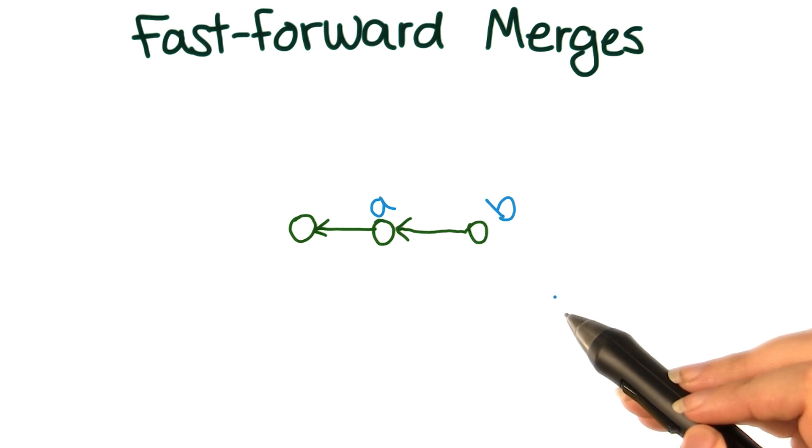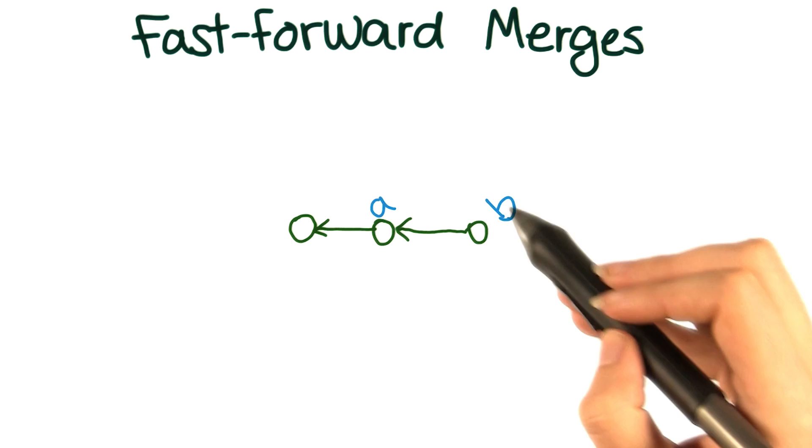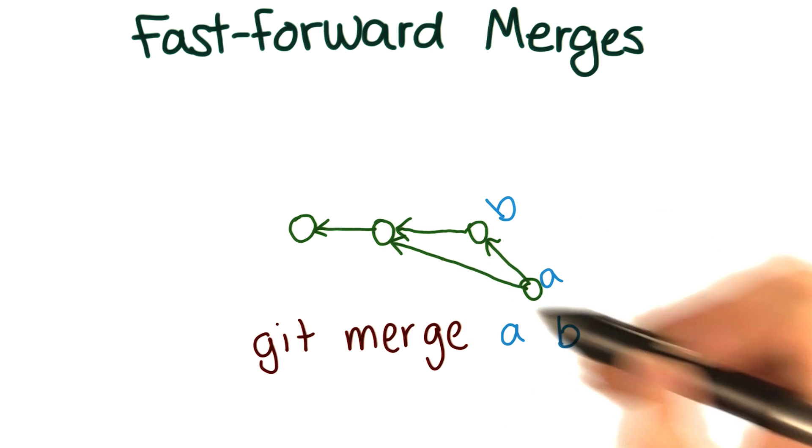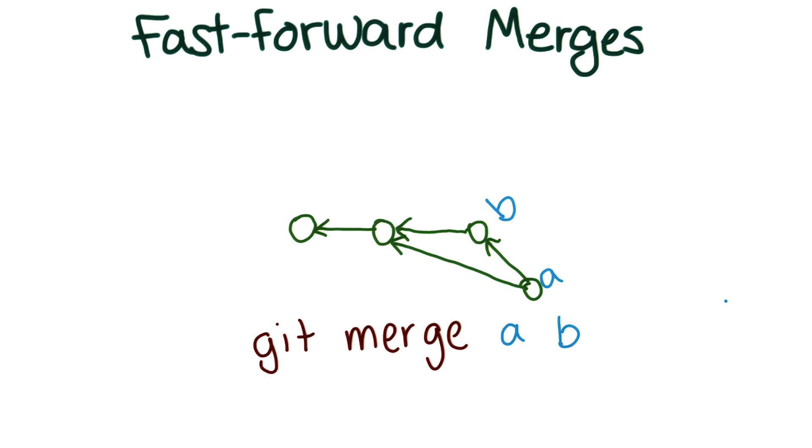If all merges happen the way we've been showing you so far, if you took B and tried to merge it into A, then you would end up with a merge commit that had both commits as a parent, and you would move A.